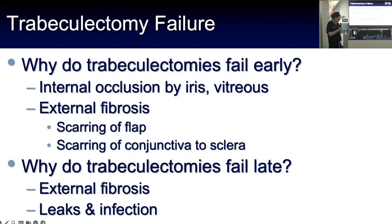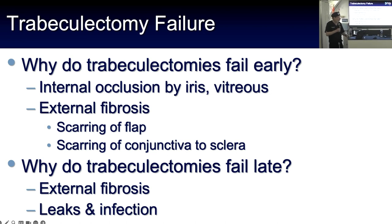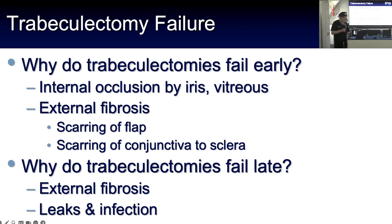Why do trabeculectomies fail early? They can fail because of occlusion by iris or vitreous, or due to scarring or fibrosis of the flap, or scarring of the conjunctiva to the sclera. Why do they fail late? They can fail because of leaks, external fibrosis, leaks, and infection.